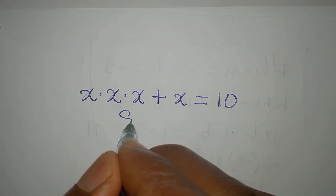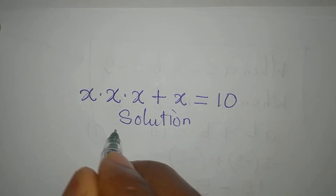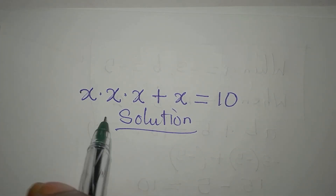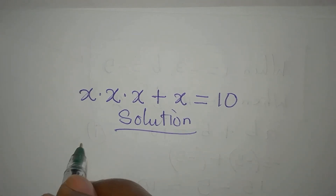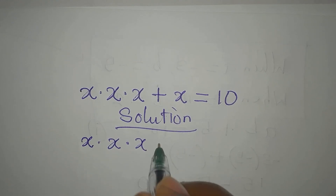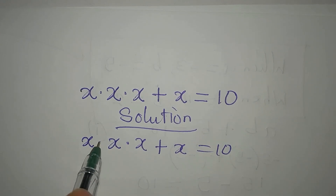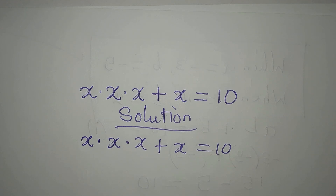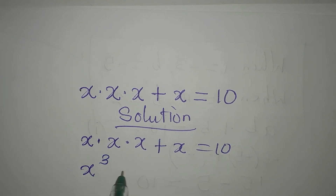Welcome to Few Cool Mathematics. In this video we will provide the solution to this problem: X times X times X plus X equals 10. This dot implies multiplication. X times X is X squared, and X squared times X is X to the power of 3, plus X.